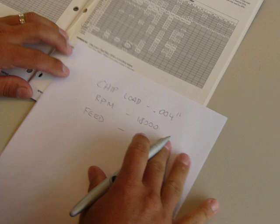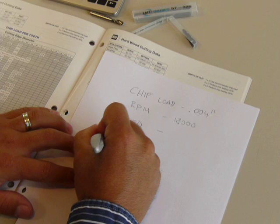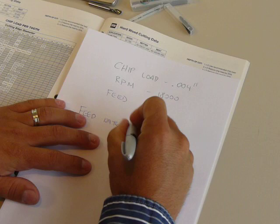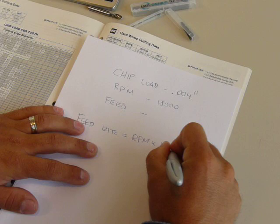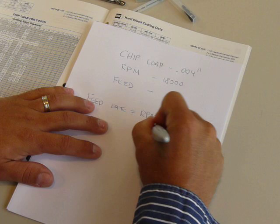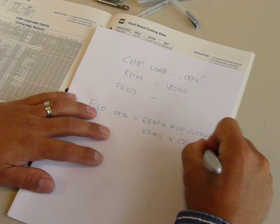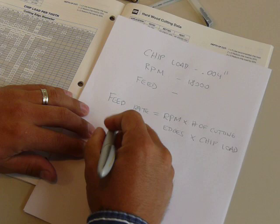Once again, we will be using the feed rate formula. Therefore, the feed rate formula is feed rate equals the RPM times the number of cutting edges that the tool has and times the recommended chip load. So, we now simply need to put in the two given values that we have to find out the third one.